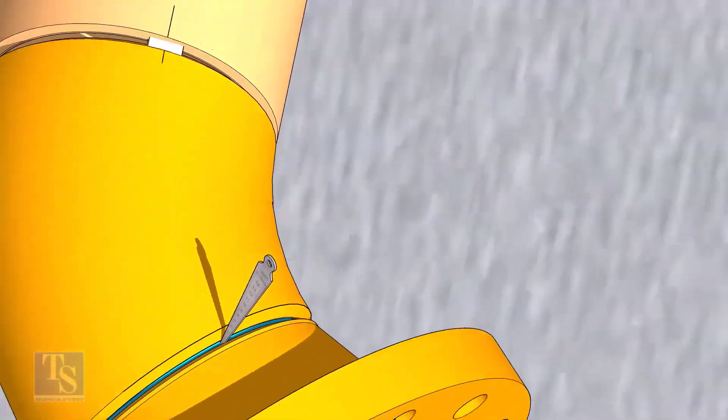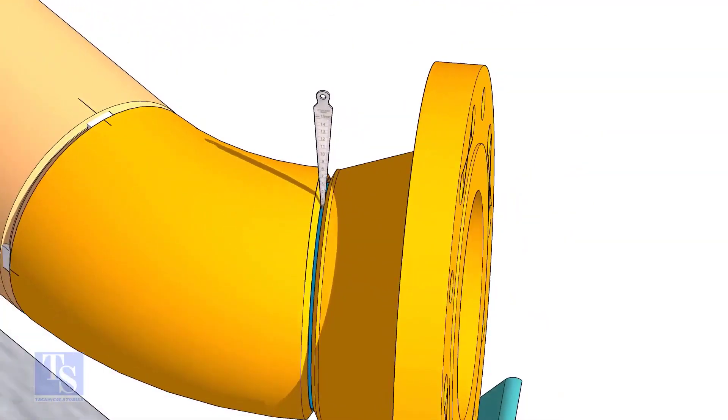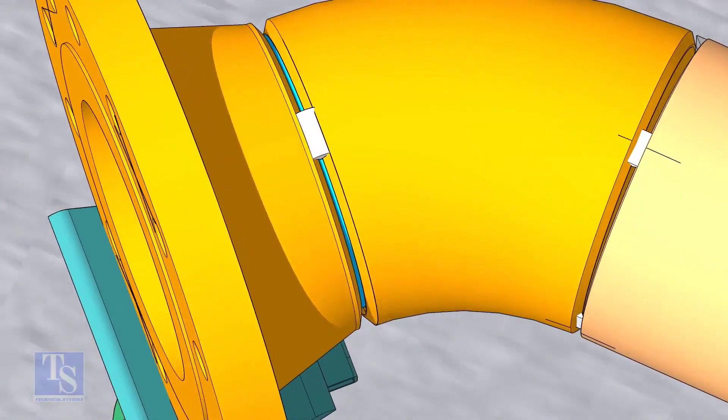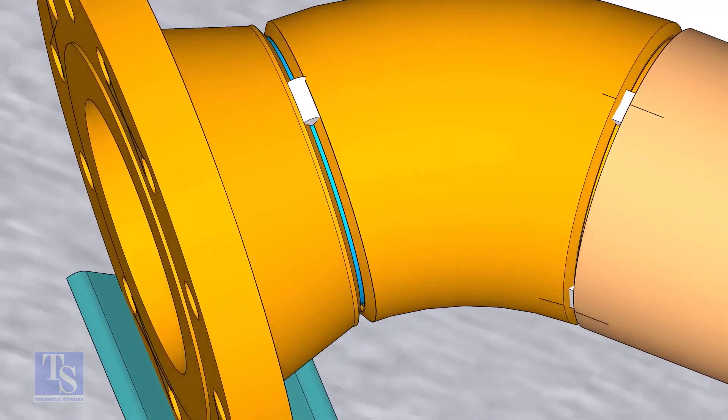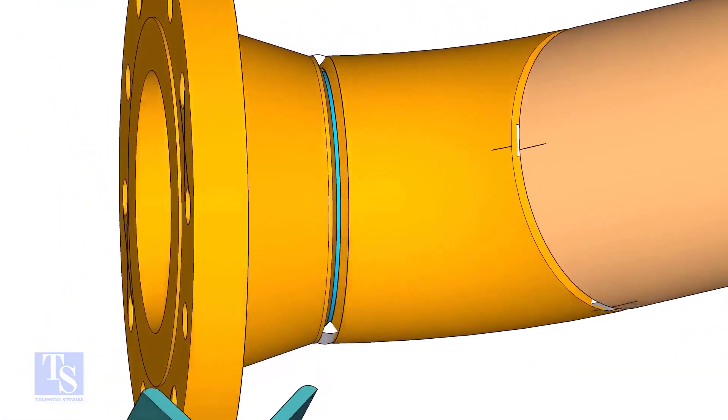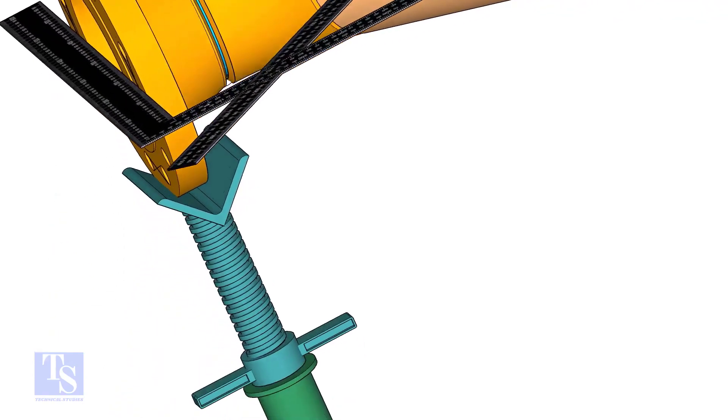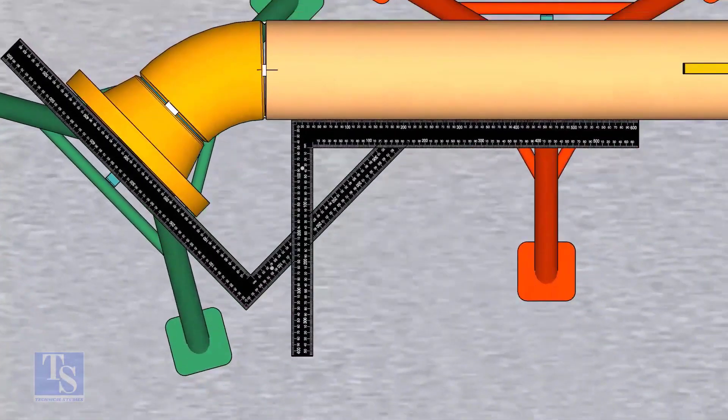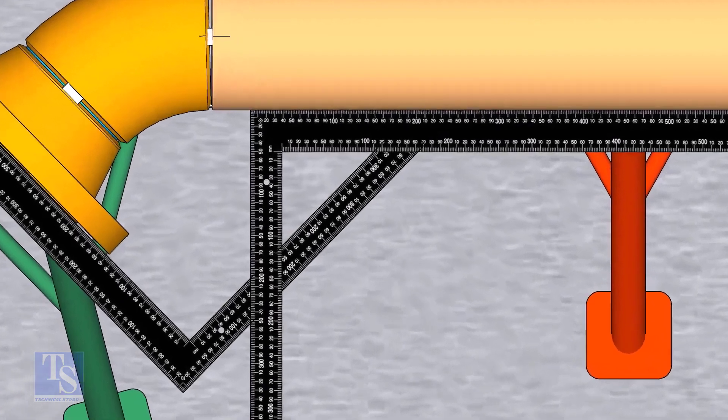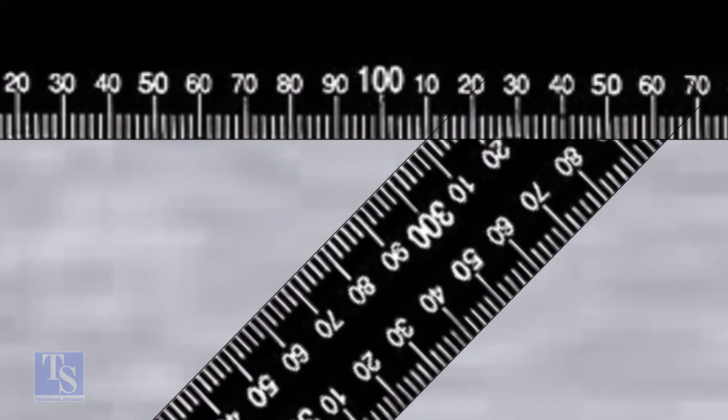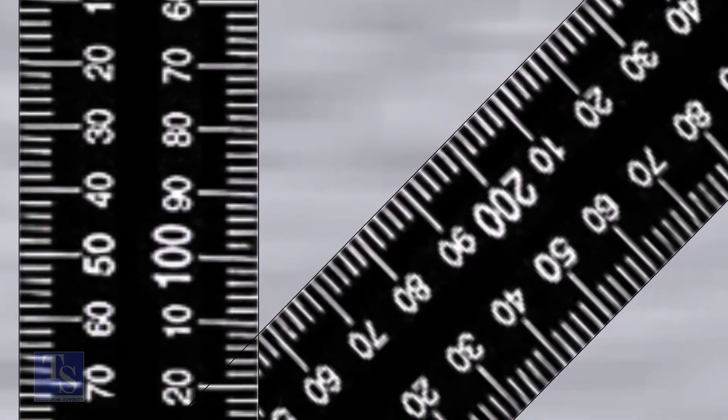Tack weld on the top and bottom sides of the joint. Check the degree of the flange face to the pipe. Tack weld on both sides of the joint.